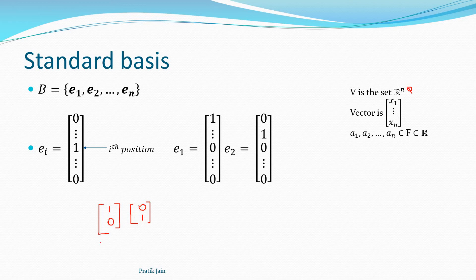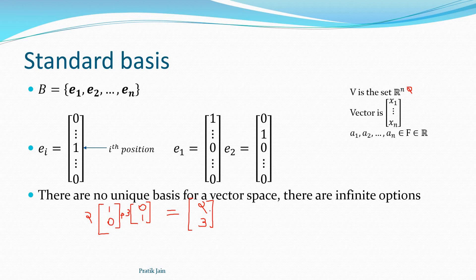For R², if n equals 2, the first basis will be (1,0) and the second basis will be (0,1). These are known as the standard basis because they are the easiest to work with. If you want to represent any vector, say (2,3), it is very simple: multiply the first basis by 2, multiply the second basis by 3, and add both of them — you get the vector back.